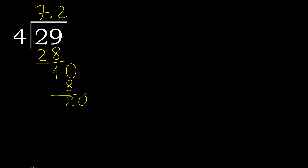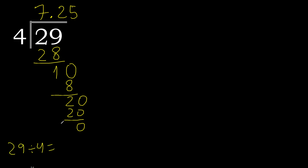Always complete with 0. Point is here. 20. 4 multiplied by 5 is 20 — subtract. 0, 0. Therefore finish. 29 divided by 4 is 7.25.